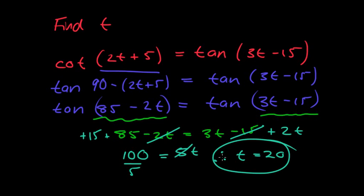The most important things to remember: sin theta equals cos(90 minus theta); cos theta equals sin(90 minus theta); tan theta equals cot(90 minus theta); cosec is paired with sec, and sec is paired with cosec. Learn these relationships — they'll help you in the coming lessons. Enjoy!